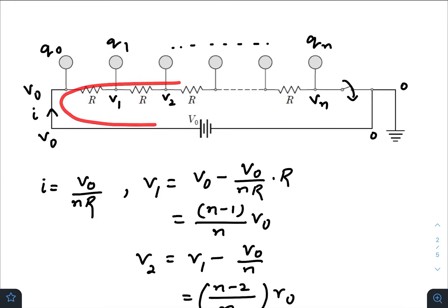The current that will flow through the whole circuit would be V₀ divided by nR, as there are n number of resistances connected in series. The potential at this point, V₁, would be V₀ minus the potential drop across this resistance, that is iR, which equals (n-1)/n times V₀.